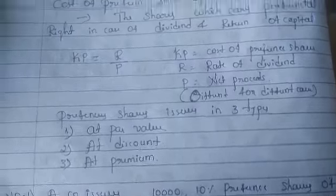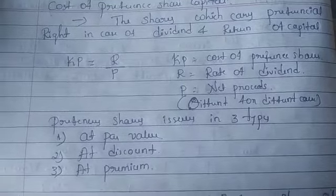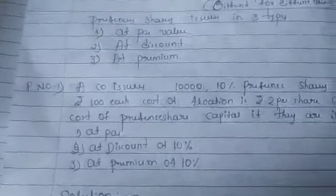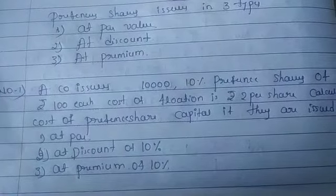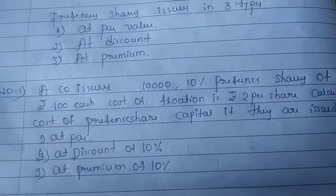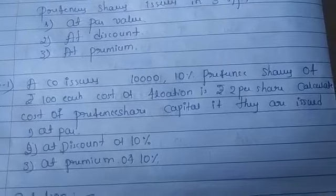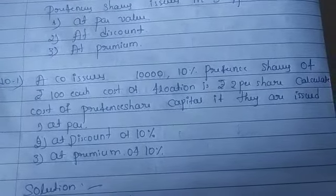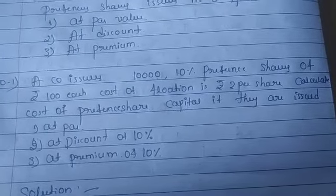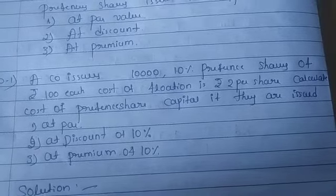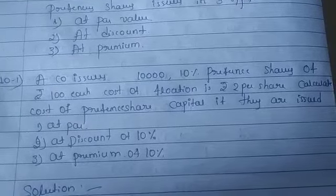Let's start with the problem. Problem number one: a company issues ten thousand ten percent preference shares of rupees hundred each. Cost of floatation is rupees two per share. Calculate the cost of preference share capital if they are issued: first at par, second at a discount of ten percent, and third at a premium of ten percent.